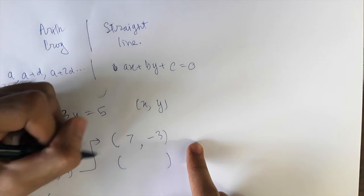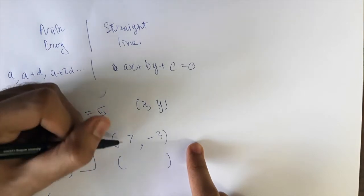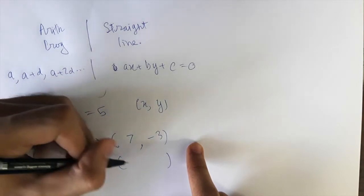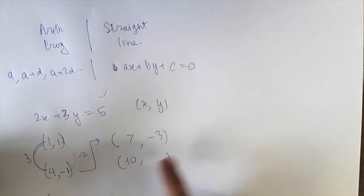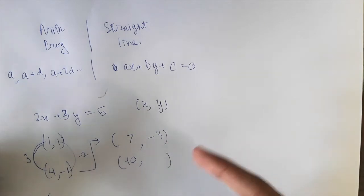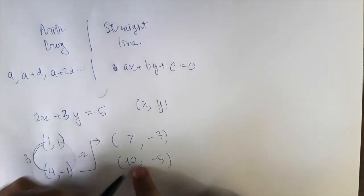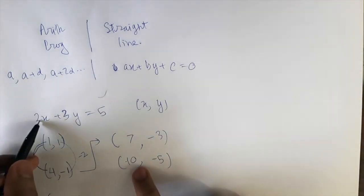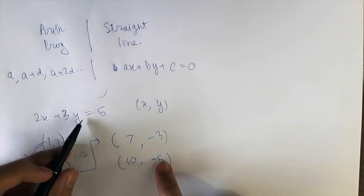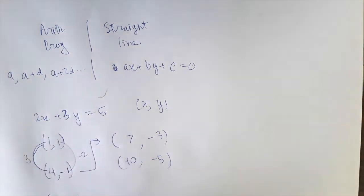From 4 to 7 we went +3, so 7+3 gives x=10. From -1 to -3 we went -2, so doing -2 again gives y=-5. Check: 2×10 = 20, 3×5 = 15, and 20 - 15 = 5. Works pretty neatly. There's actually some deeper connections here which we're going to explore.